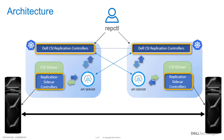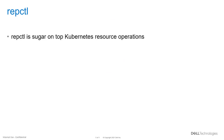Last but not least, we have the RepCTL utility. RepCTL is there to help ease the management of objects across different clusters. It is literally a binary — sugar on top of Kubernetes resource operations. Everything we do with RepCTL, you can also do with vanilla kubectl operations. It's just that with RepCTL, we can talk to multiple clusters at once, which simplifies a lot of things.